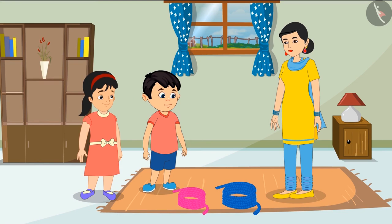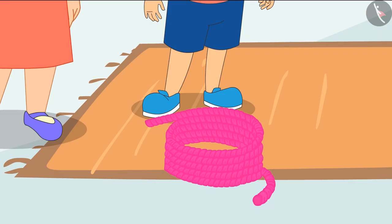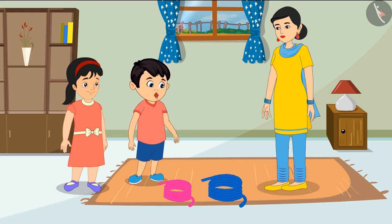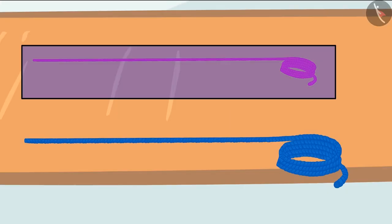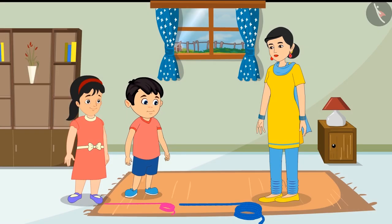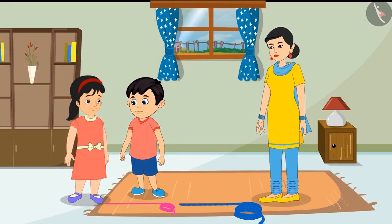This rope is very beautiful. Yes, let's take this one. Children, this rope is thin. If you make a swing with it, the swing will break as soon as you sit on it. Really, Mummy? What should we do now?